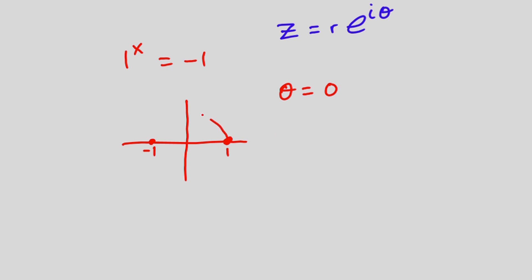But the truth is that we can rotate and we will get theta to be equal to two pi. We can still rotate again so we can get so many angles for theta. So to get a general angle for theta we're going to write theta to be equal to zero plus 2n pi where n is an integer.